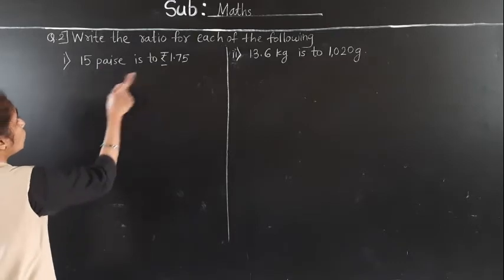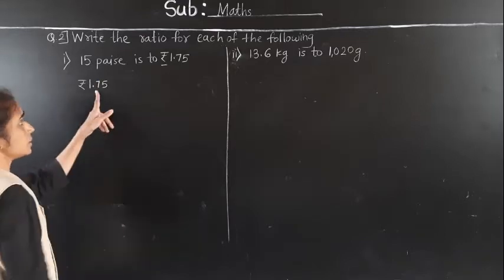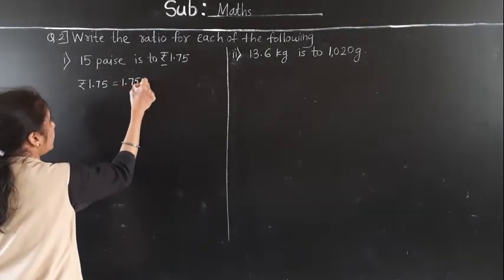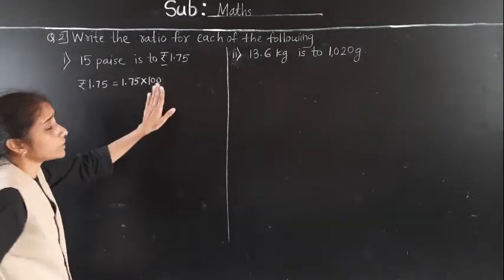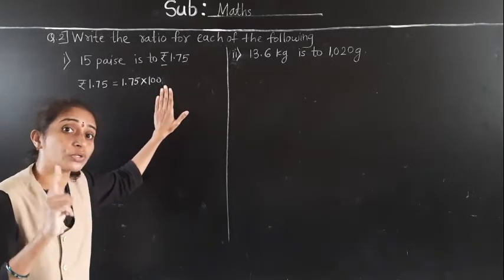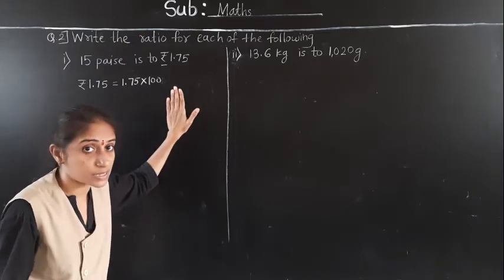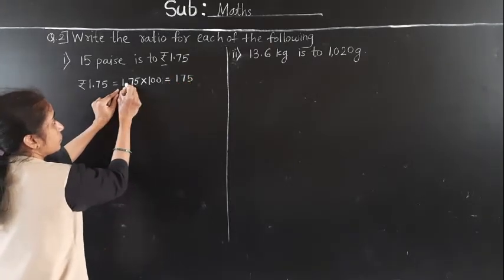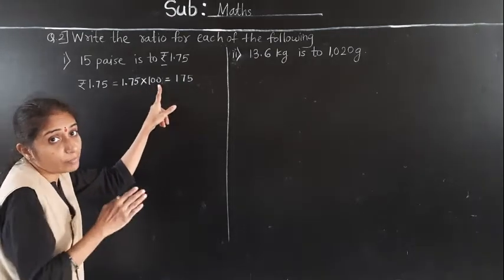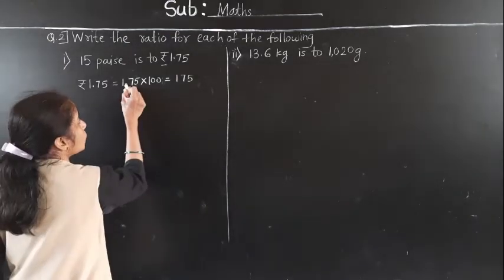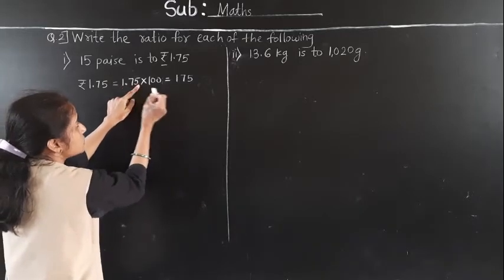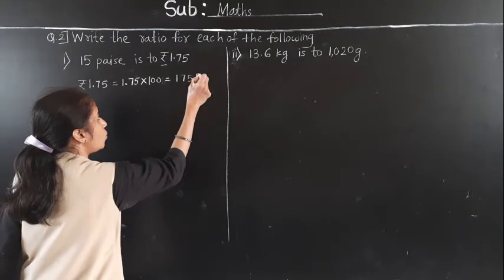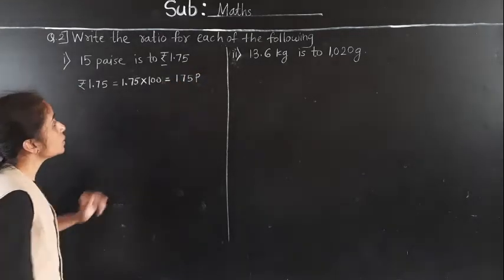Rupees 1.75 — we are going to convert into paise. 1 rupee means 100 paise, so we multiply by 100. When we multiply by 100, we shift the decimal point 2 digits to the right. So 1.75 multiplied by 100 gives us 175 paise.